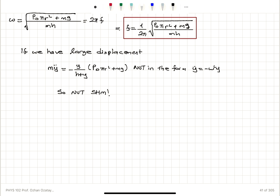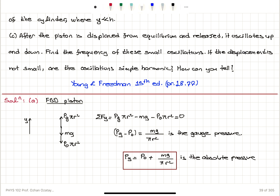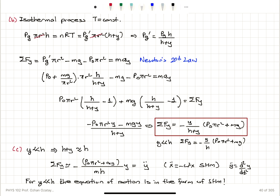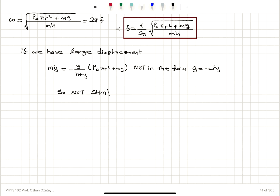For small displacement y, we obtain simple harmonic oscillations. If the displacement is too large — comparable to h — the equation of motion is not that of simple harmonic motion, so we cannot apply the same analysis.